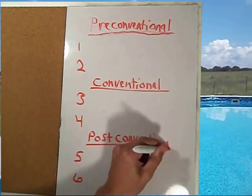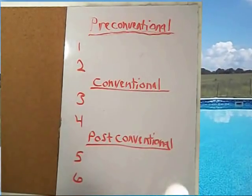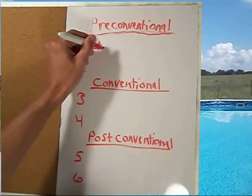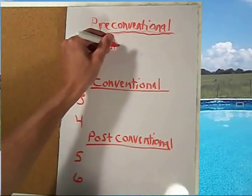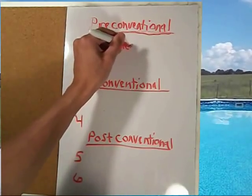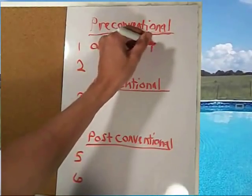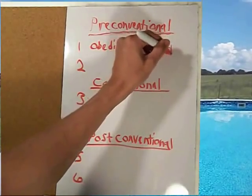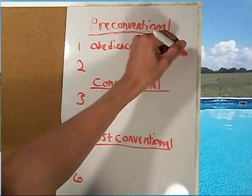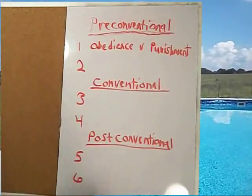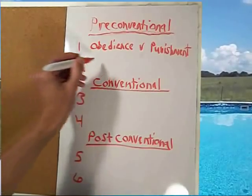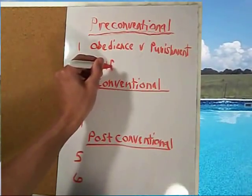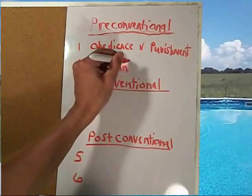Each level has two stages. Stage one is the obedience versus punishment orientation — this is where you obey rules to avoid punishment. Stage two is the self-interest orientation — this is where right and wrong is determined by personal needs and wants.